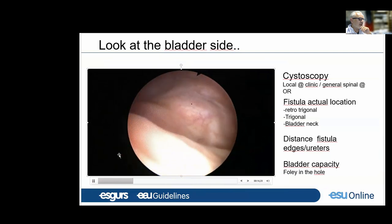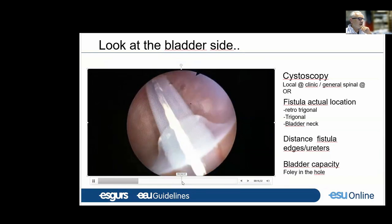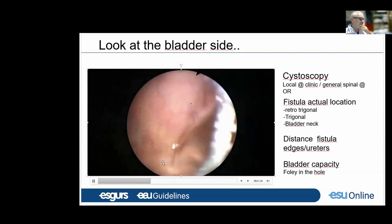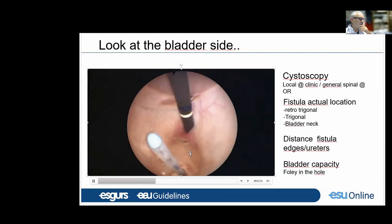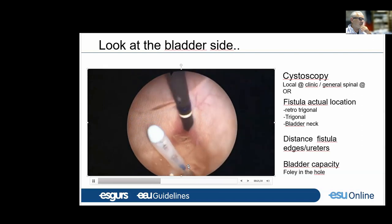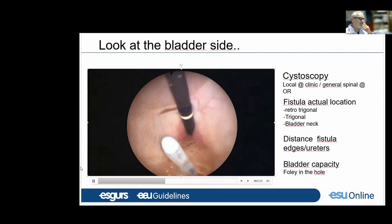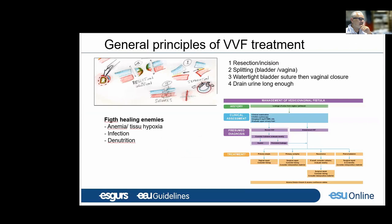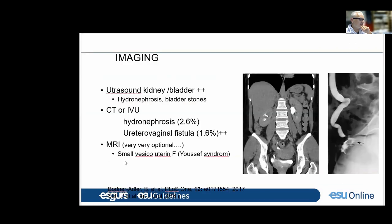We can see that the fistula is away from the trigone and away from the ureteral orifice. In some cases it could be useful to go for imaging, mainly MRI, for small vesicovaginal fistulae.